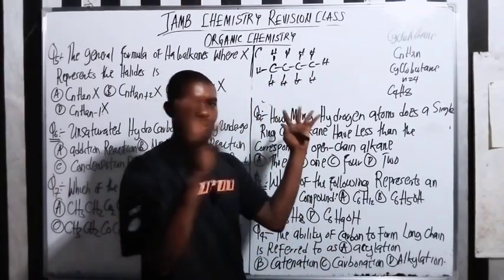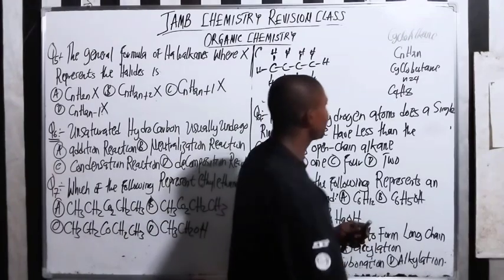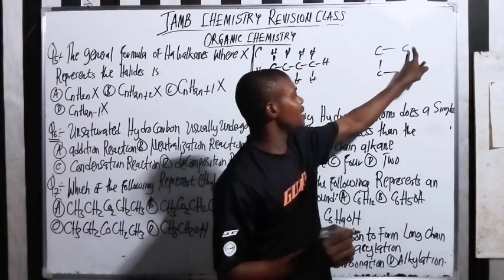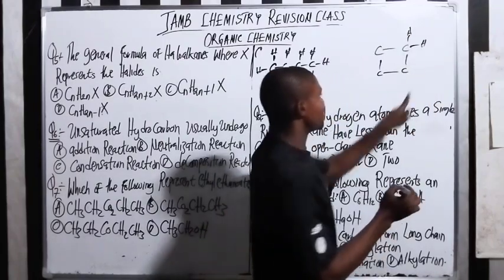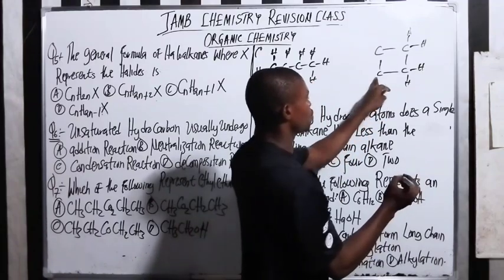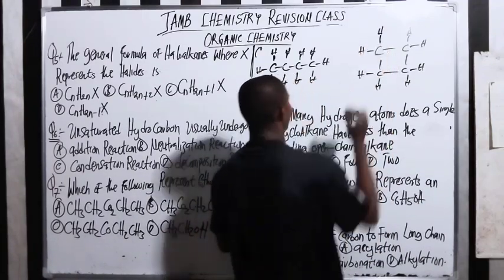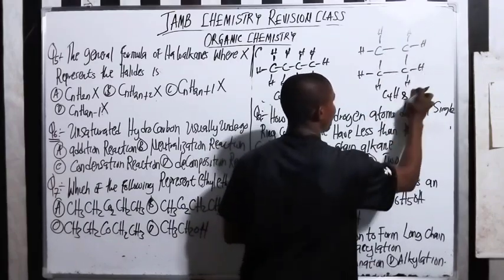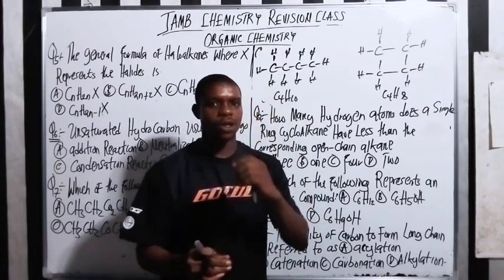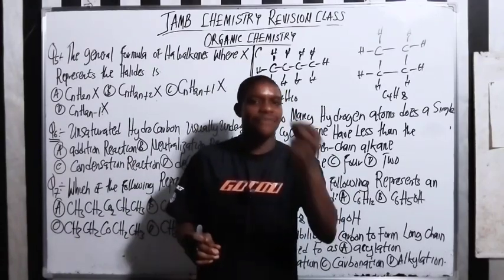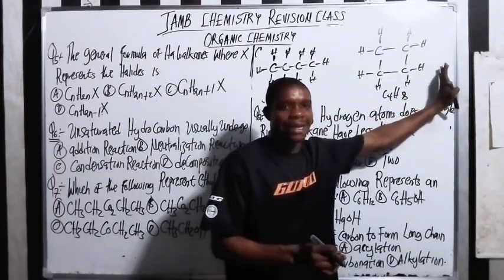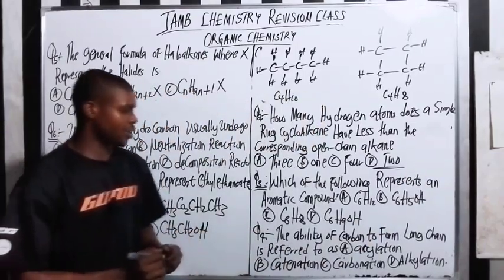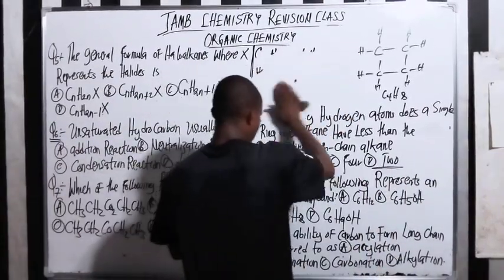Cyclobutane means the carbons are in a ring — four carbons in a ring. When you draw the ring with four carbons, each carbon now has only two hydrogens instead of the open-chain arrangement. So cyclobutane is C4H8, which is eight hydrogens compared to butane's ten. Remember, carbon forms four bonds to complete its octet. So cycloalkanes have only two fewer hydrogens than the corresponding alkanes. The answer is D — two hydrogen atoms.